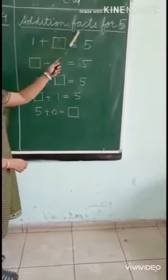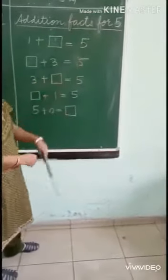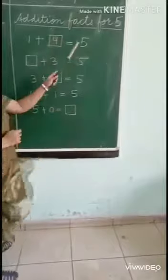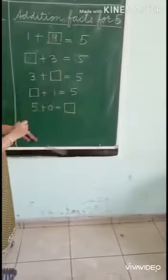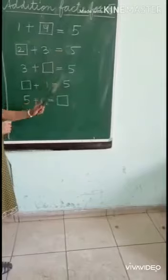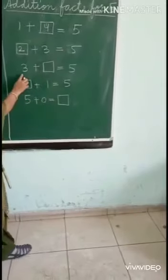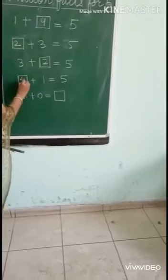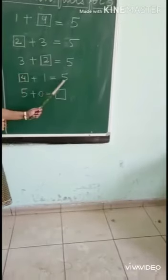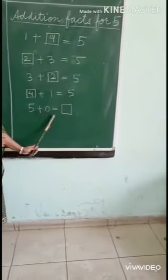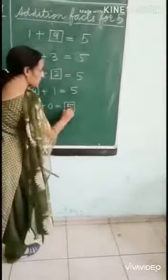Addition facts for 5: 1 plus 4 is equal to 5, 2 plus 3 is equal to 5, 3 plus 2 is equal to 5, 4 plus 1 is equal to 5, and 5 plus 0 is equal to 5.